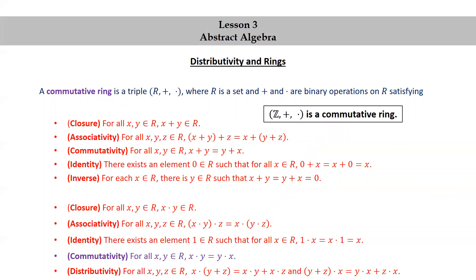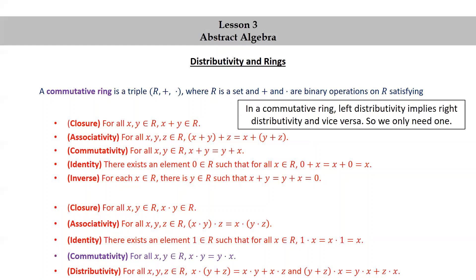So the set of integers together with addition and multiplication is a commutative ring. In a commutative ring, left distributivity implies right distributivity and vice versa, so we only need one. We could, for example, cross out right distributivity because it's implied by left distributivity.